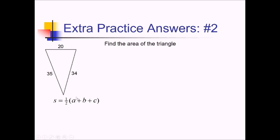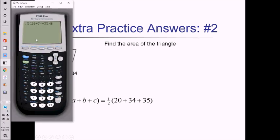So that's going to be one half of, we'll say, 20 plus 34 plus 35. And let's use the calculator to see what that comes out to exactly. So pressing enter on that, we have an S value of 44.5.